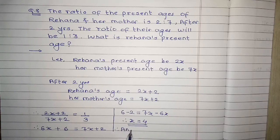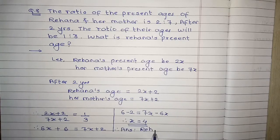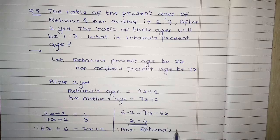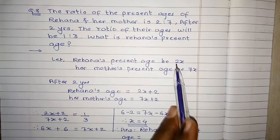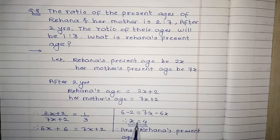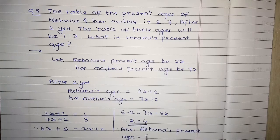So therefore, answer में हमारा क्या मिलेगा? Therefore, Rehana's present age equals to 2x, so 2 into 4 करेंगे तो कितना मिलेगा — 8. तो answer होगा 8 years, रेहाना की present age 8 years है।